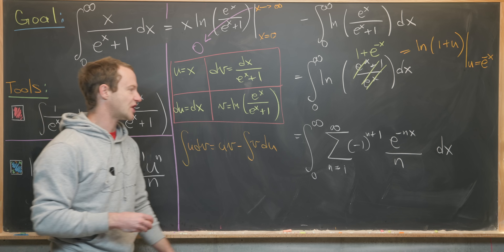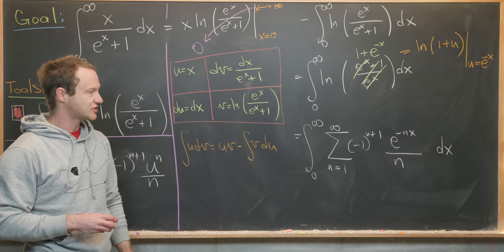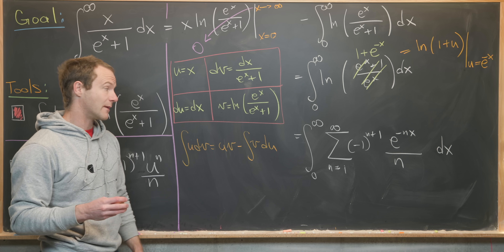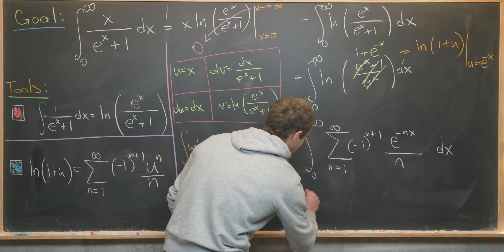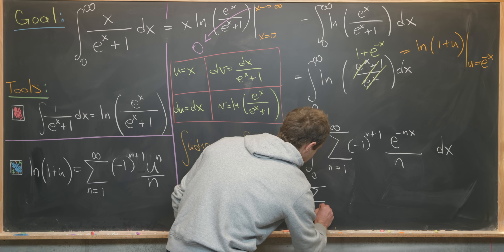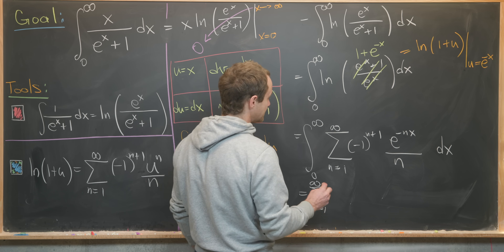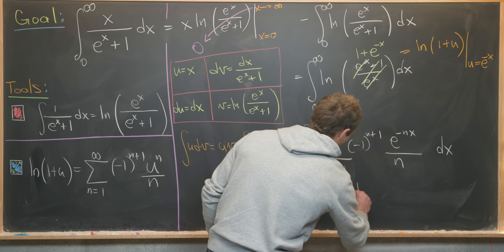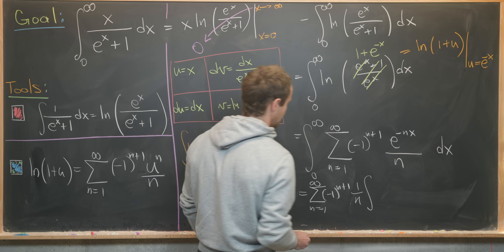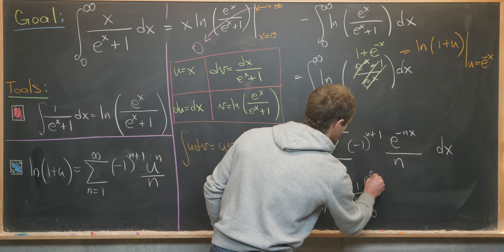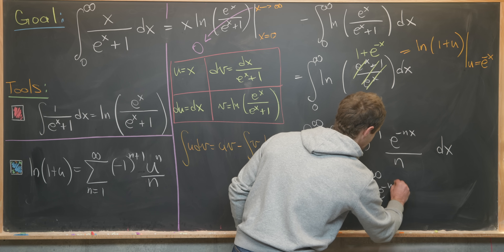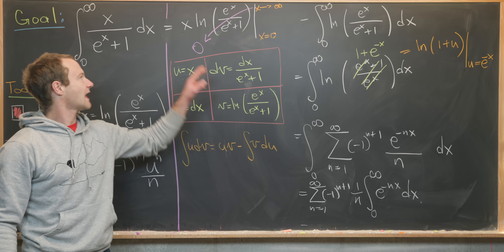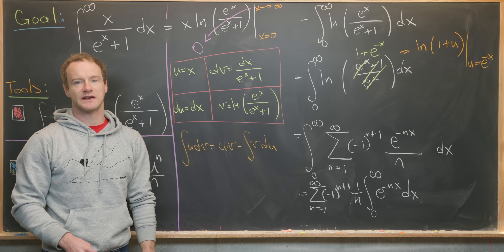Next we exchange the order of summation and integration, which we can do by the dominated convergence theorem. That gives us the sum as n goes from one to infinity of minus one to the n plus one times one over n, times the integral from zero to infinity of e to the minus nx dx.